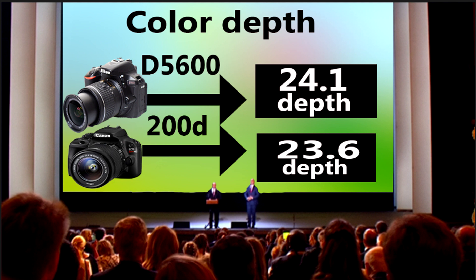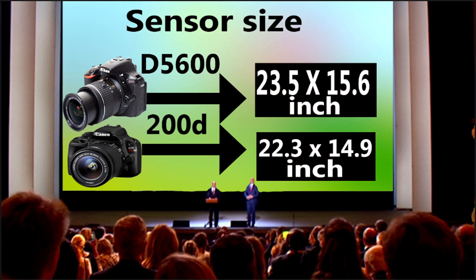The fifth difference is color depth — Nikon scores 24.1 and Canon scores 23.6. The sixth advantage of the Nikon D5600 over the Canon 200D is a bigger sensor size: 23.5 × 15.6mm versus Canon's 22.3 × 14.1mm image sensor.